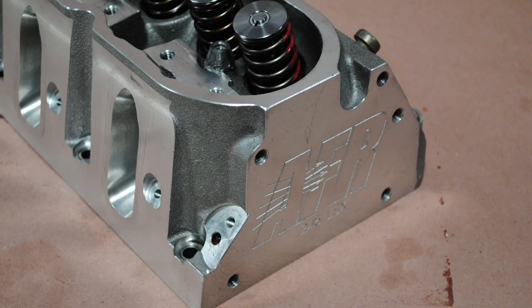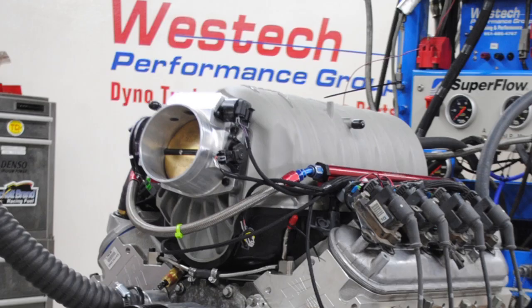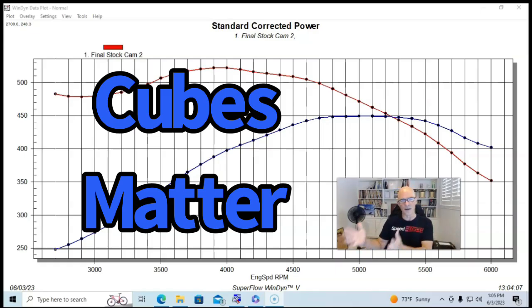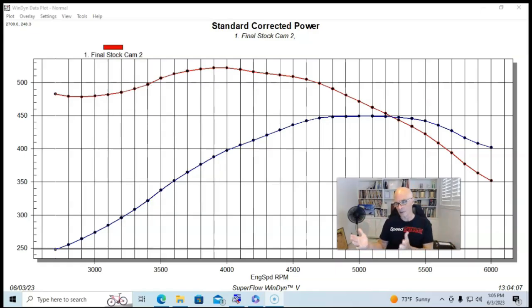But in terms of your normal NA modifications, the camshaft, the cylinder heads, the intake manifold, none of those other things are going to add nearly as much displacement as going from a 5.3 to a 383, or in this case, from a 6.0 to a 408. That's definitely going to add power everywhere. And that's exactly where we started.